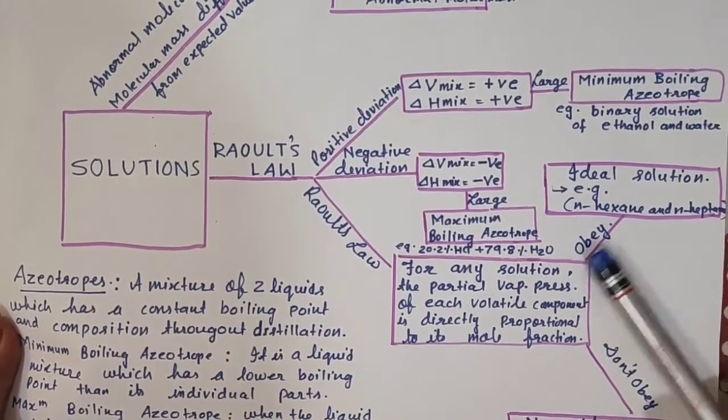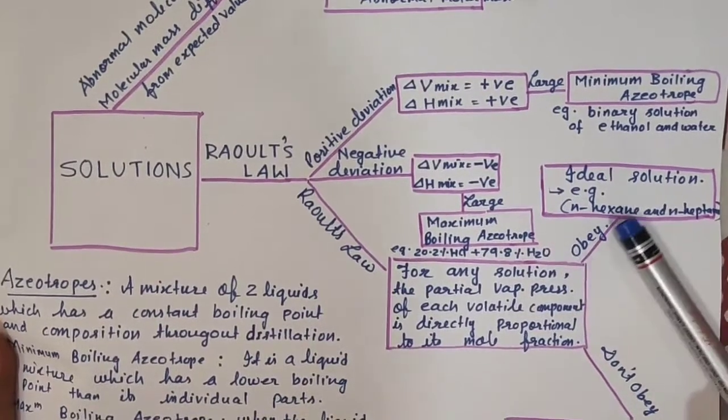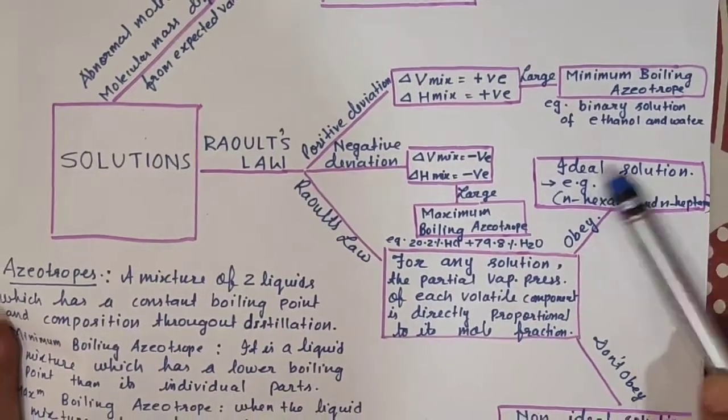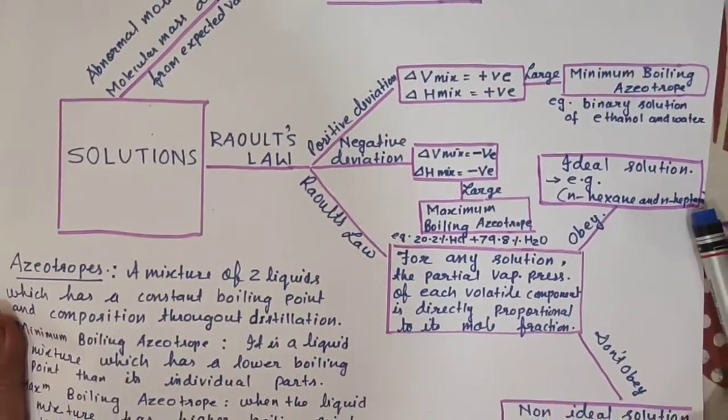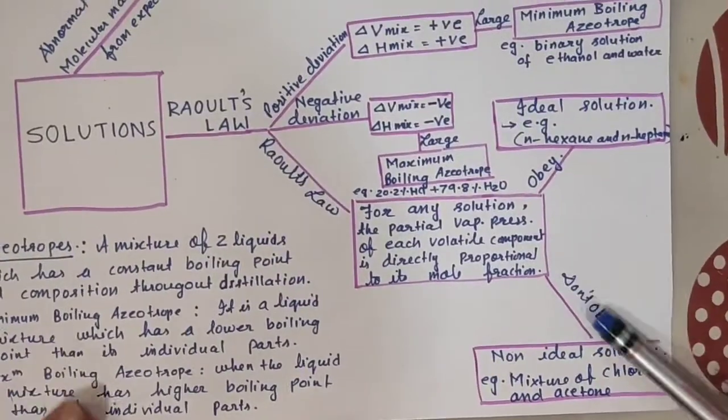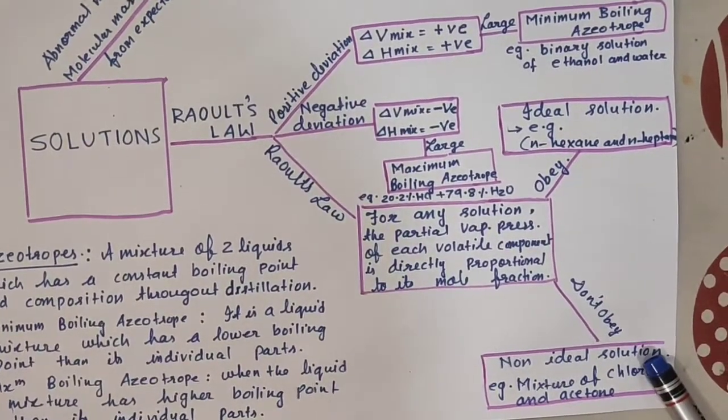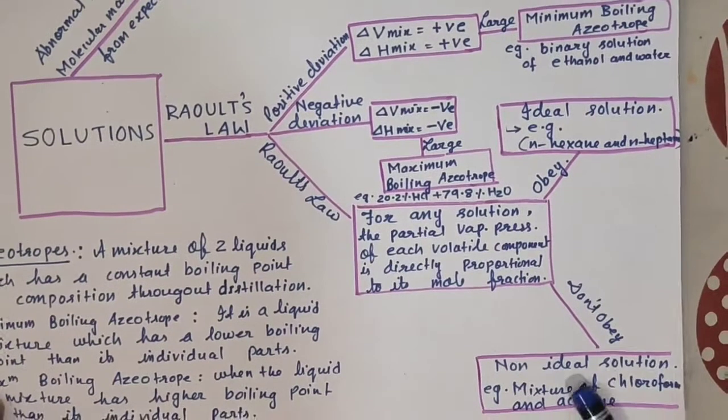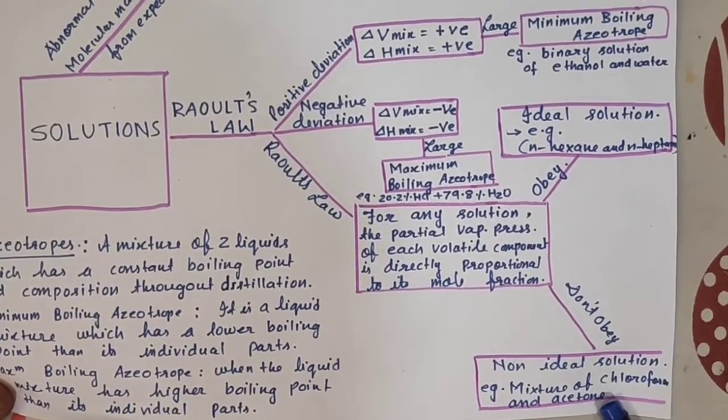In ideal solution, normal hexane and normal heptane are there. Those who obey Raoult's law, the good students who obey Raoult's law, they are forming ideal solution. Normal hexane and normal heptane.